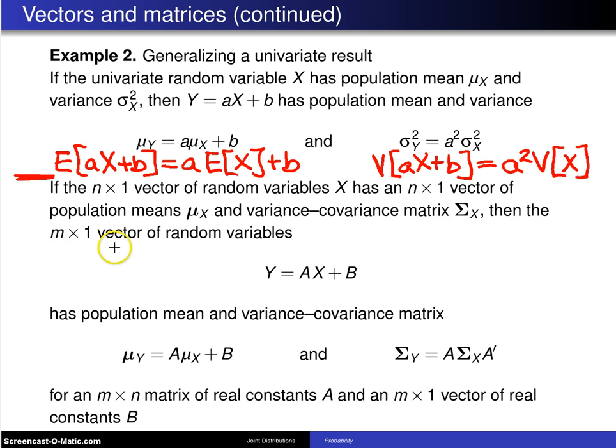then the m×1 vector of random variables Y = AX + B. This is the analog to what we have up there. Y = AX + B has a population mean μ_Y = Aμ_X + B,